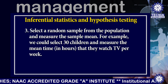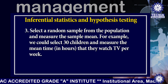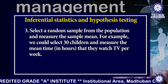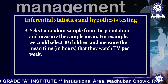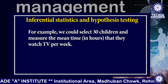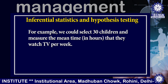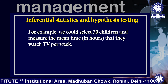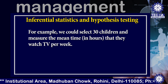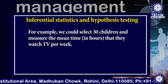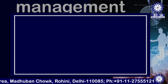Third, select a random sample from the population and measure the sample mean. For example, we could select 30 children and measure the mean time in hours that they watch TV per week.